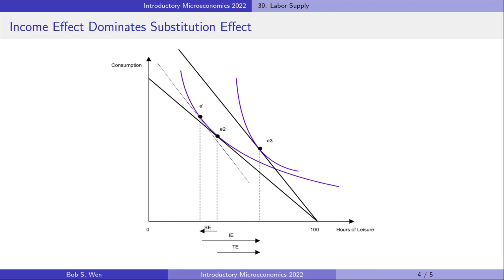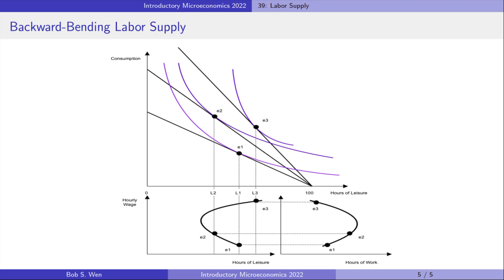As a result, as the hourly wage rises, she consumes more leisure and works less. In conclusion, as the hourly wage increases, Amy will work more hours. But as the hourly wage rises to a very high level, she may work less. Her labor supply curve could be backward bending.